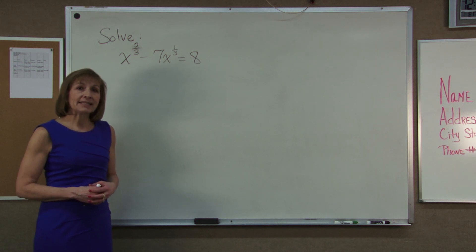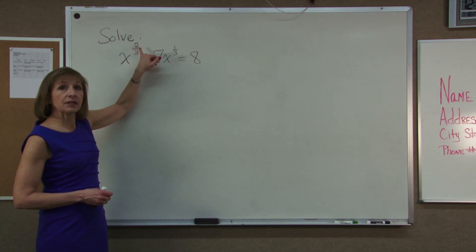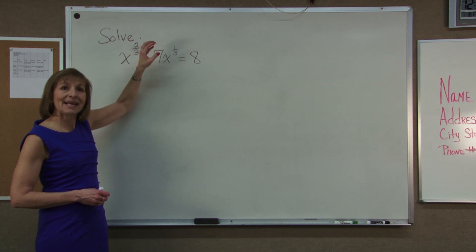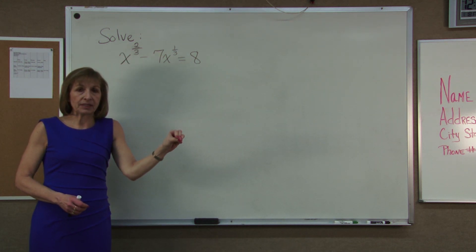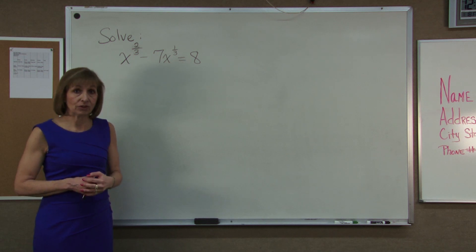The way that we can identify whether we have something that can be written in quadratic form is if in the terms the exponent in one of the terms is exactly double the exponent in the other term and then possibly I just have a constant term that goes along with it.